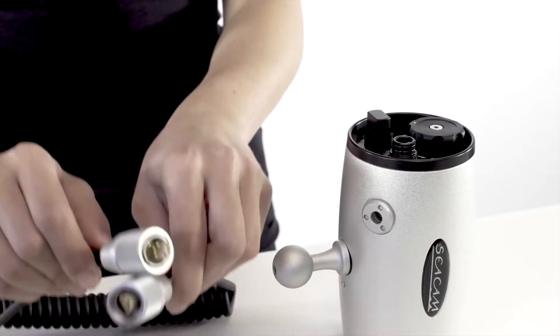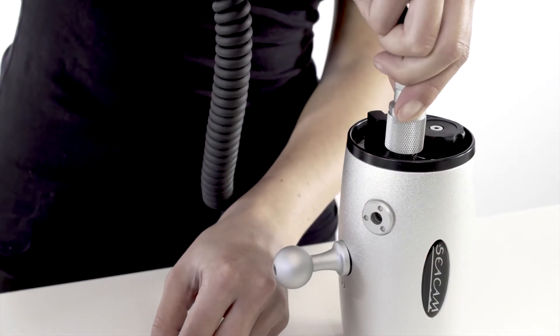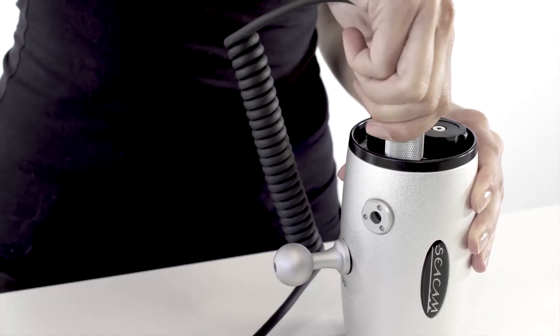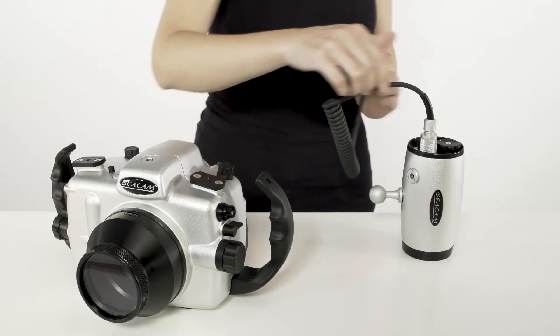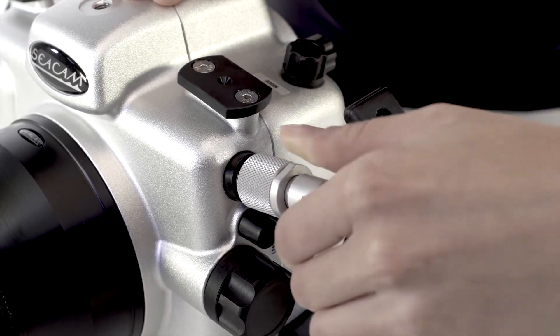In order to use a synchro cable with your equipment, plug the cable into the S6 socket of your Sea Flash 60D and tighten the seal properly. Repeat this action at the S6 socket on the front side of your housing.